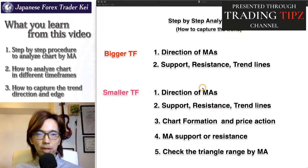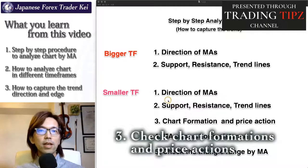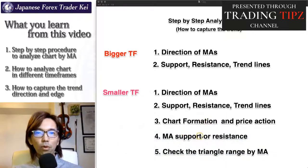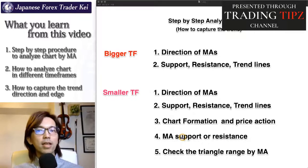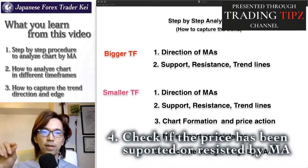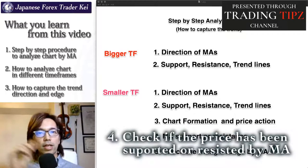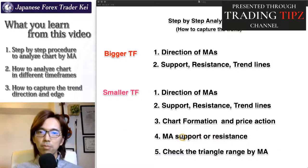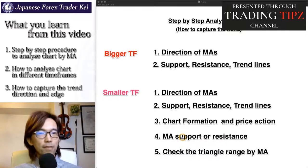Check the chart formations and price actions of the market, like thrust ups or pin bars — things like that from the price action videos. Then wait and see if the price is going to be either resisted or supported by the moving averages. When the market is on a bull trend and steady, the price keeps supported by the moving average and moves up. When a trend is steady bearish, the price tends to be resisted by the moving average and keeps going down. Also check for higher highs, higher lows, or lower highs, lower lows on the market.